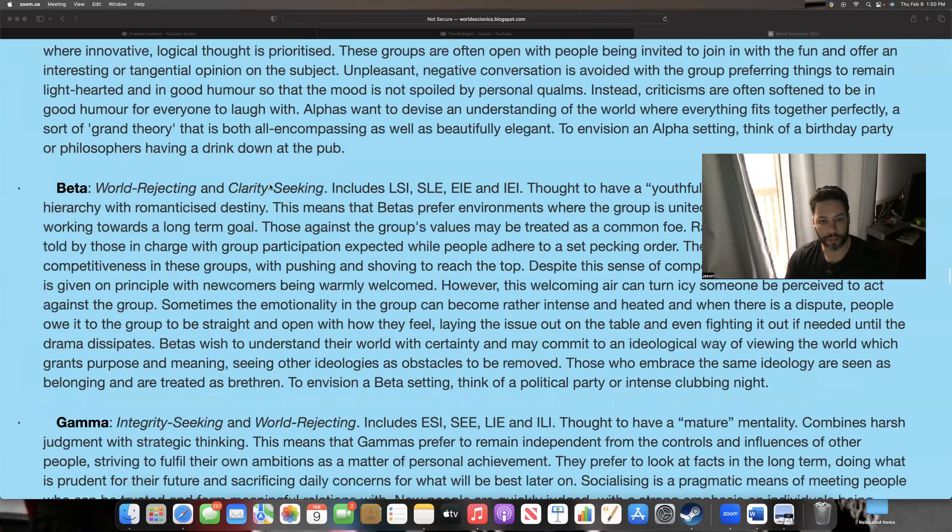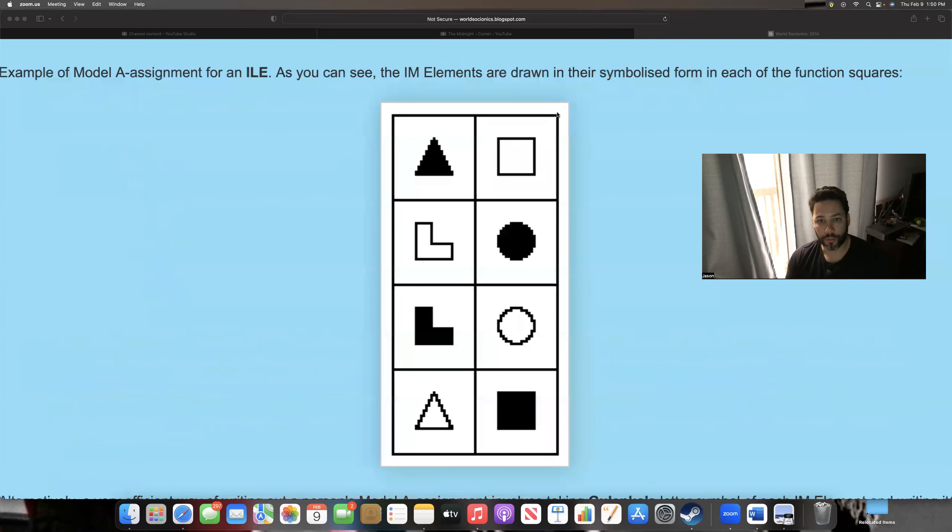But let's see - this is your ego block, this top section right here, these top two. And then your super ego blocks. So this is what you're really good at, really enjoy, really focus on all the time. And this is what you absolutely suck at, hate, can't stand, and try to stay away from pretty much all the time.